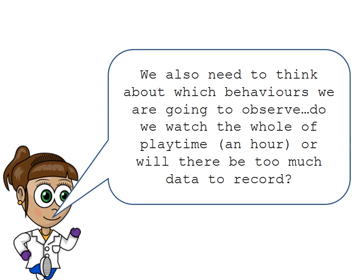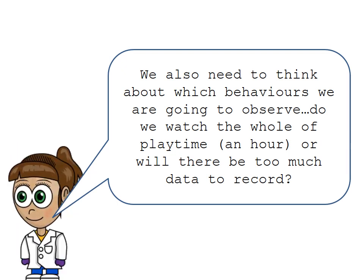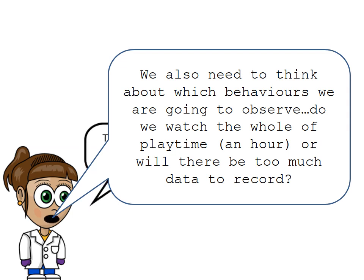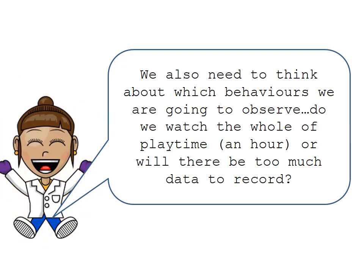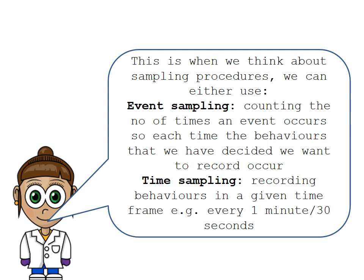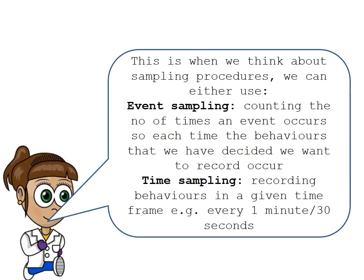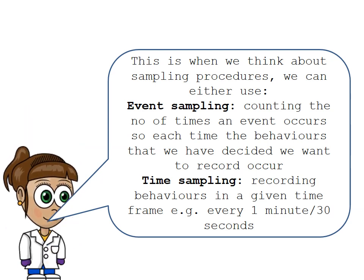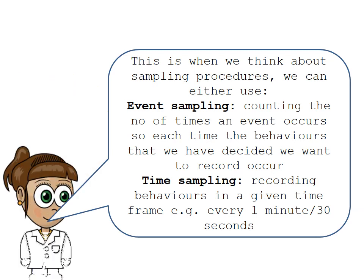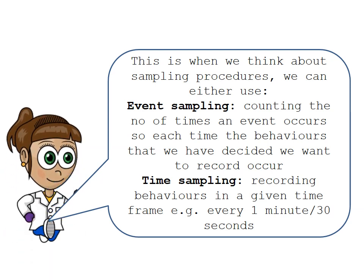We also need to consider which behaviours to observe and when. Do we watch the whole hour of playtime, or is there too much data to record? This is where sampling procedures come in. With event sampling, you count every time a target behaviour occurs throughout the entire observation period. With time sampling, you decide in advance to observe only a specific time window — such as the first or last 10 minutes of playtime — and record all target behaviours within that frame.